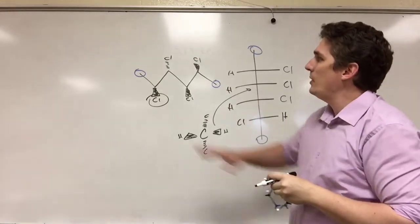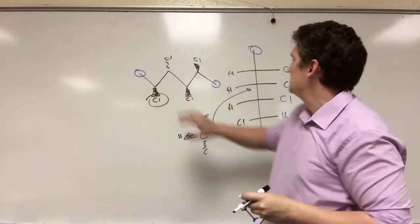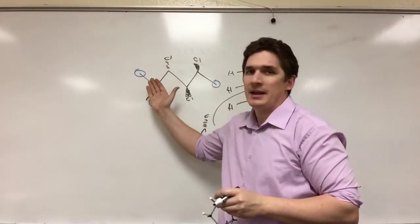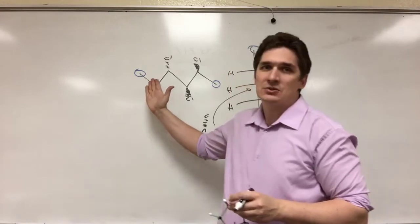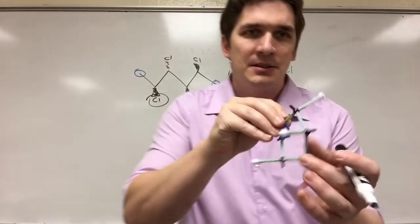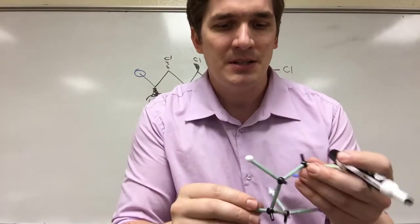Now, the way this looks, it looks like the chlorines are going in opposite directions, but here they're on the same side. Well, as drawn, that's correct. And in the staggered conformation, this chlorine's popping out in the board, this one's going in. But when we coil it around, they end up getting to be on the same sides.